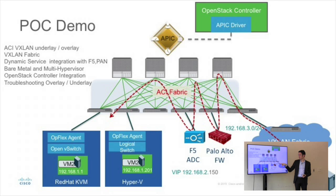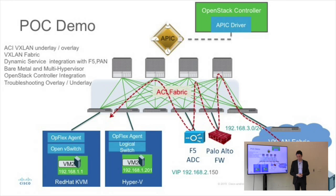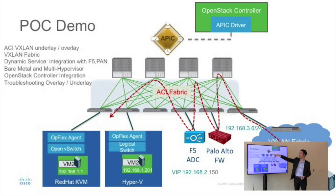Once we have the proper rule for that device IP, it will go to an F5 load balancer. From there it will load balance traffic across KVM where I have three OpenStack VMs, and Hyper-V — Microsoft. I could also add VMware, but in this case I'm using KVM and Hyper-V just to show you a multi-hypervisor environment.